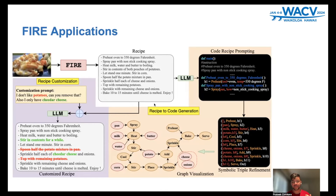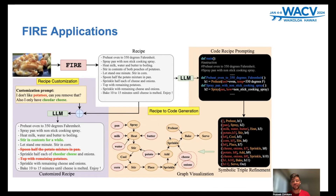The second application is recipe-to-code generation. Once I have my recipe, I pass it to a large language model and convert it to a code-type format. Further, that code is passed to an LLM again and we convert it into a symbolic format. Then we visualize it in the form of a graph to understand the process better.